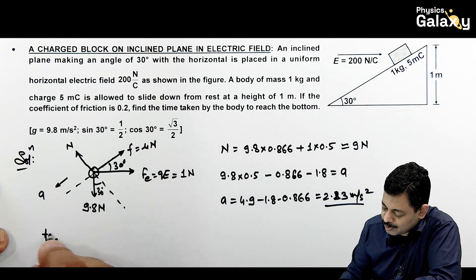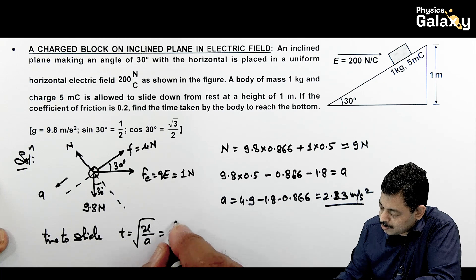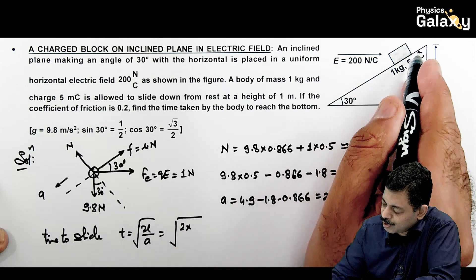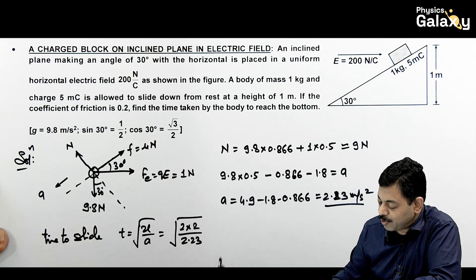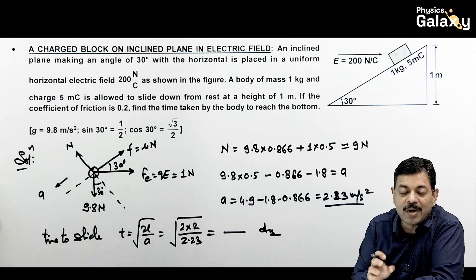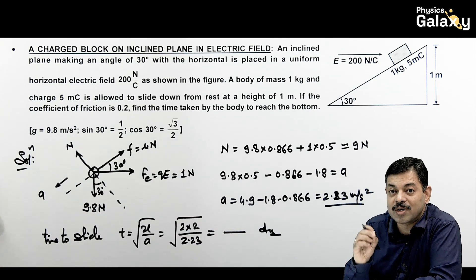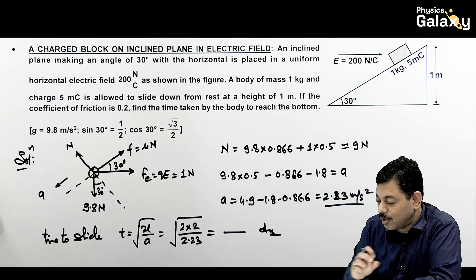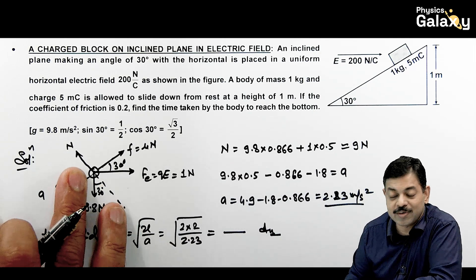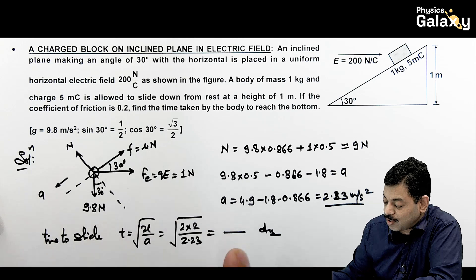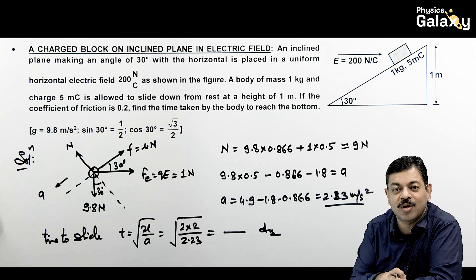So time to slide, if you calculate here, time to slide you will be getting as root 2L by a, so this comes out to be root of 2 into length of incline is 1 by sin 30 which is 2 divided by 2.23. Again this requires time for calculation, you just solve this and get the result. So again you can see here, question is not tough but calculations are really involved. Some questions certainly come which are based on the calculation and you have to give time. This was MCQ asked in JEE Main and obviously with approximate calculations you can match which result is appropriate, but calculation strength and efficiency you need to be good.